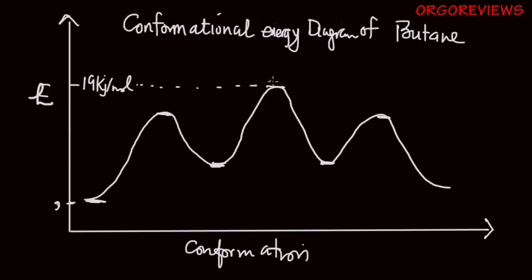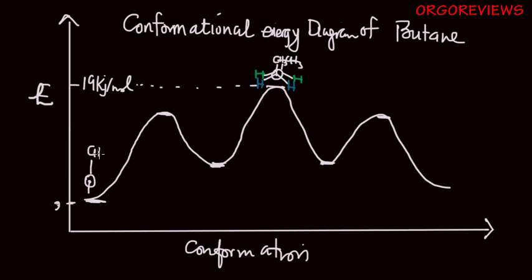Let's look at the extremes on the diagram. The highest energy corresponds to the syn-eclipsed conformation, which has CH3 groups eclipsing each other with the blue hydrogens in the front and green hydrogens behind — corresponding to about 19 kilojoules per mole. The lowest energy is the anti-conformation, with methyl groups on opposite sides, blue hydrogens pointing up, and green hydrogens pointing down at the back.